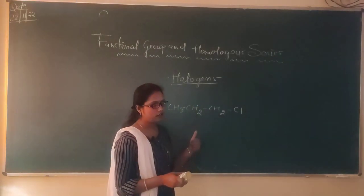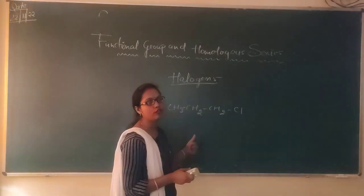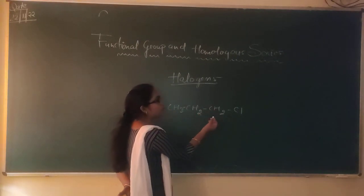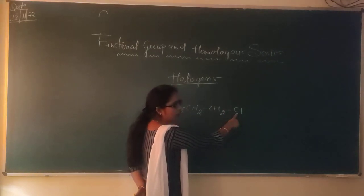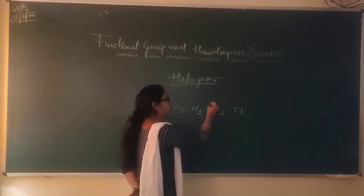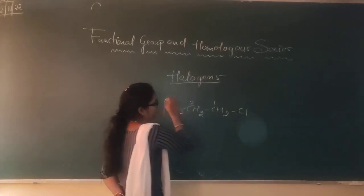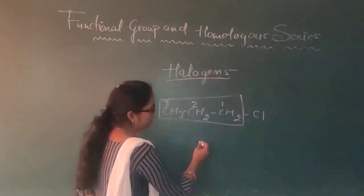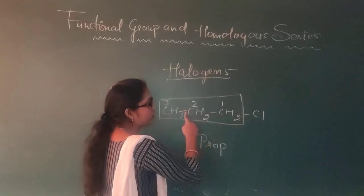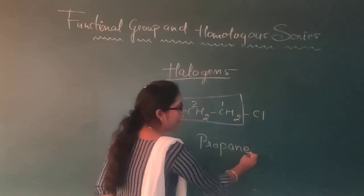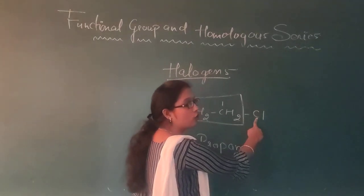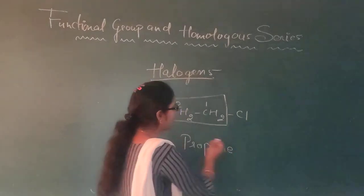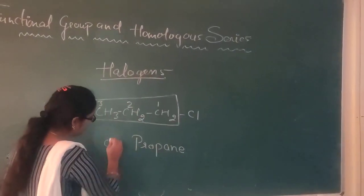Agar aapko ye compound diya hai, toh first agar aapko iska IUPAC nomenclature karna hai, toh first you have to give numbering to the carbon chain. Aap hamesha us carbon ko number one do ge, jis carbon se functional group sabse paas mein laga hua hai. Here see chlorine — chlorine is a functional group. Wo is carbon se sabse jaldi laga hua hai, toh main is carbon ko one, two, and three dunga. Three carbon means chain is propane; single bond, so 'an' and 'e' → propane. And here, aap dekho kaunsa functional group laga hai — chlorine. But jab hum IUPAC nomenclature karte hain, hum chlorine nahi bolenge, 'chloro' bolenge, and it is used as a prefix. Toh iska IUPAC name kya ho jayega? Chloro propane.